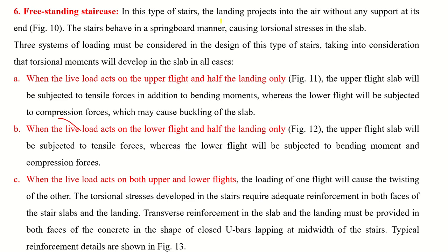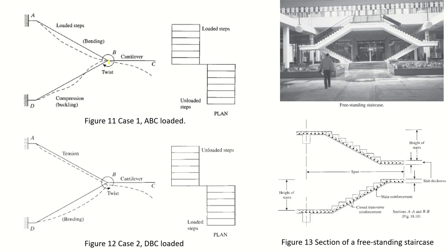Free standing stairs are a type where the landing projects into the air without any support at its end. For example, the slab is supported at point A, the landing acts as a cantilever, and the staircase is again supported at another point. The load is ultimately resisted by points A and D.